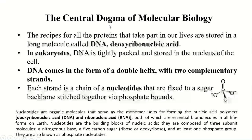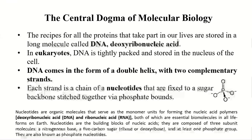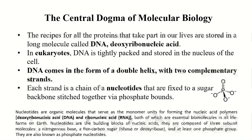Now we will talk about the central dogma of molecular biology. DNA transforms into RNA — that process is called transcription — and from RNA to protein, that transformation is called translation. The recipe for all the proteins that take part in our lives are stored in long molecules called DNA. Basically, DNA is the replication area, then DNA transforms into RNA, and RNA produces proteins. RNA is essentially the protein information coming out of DNA.